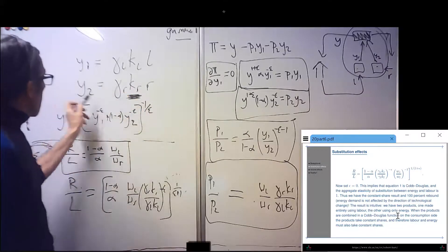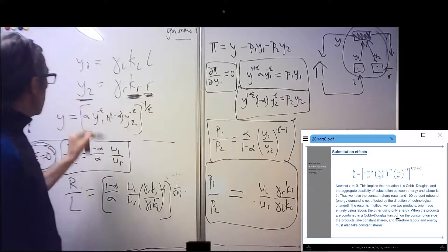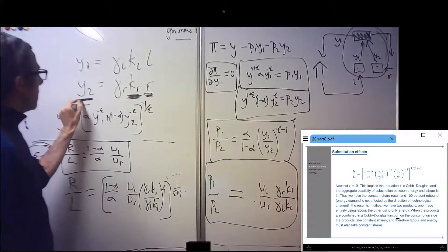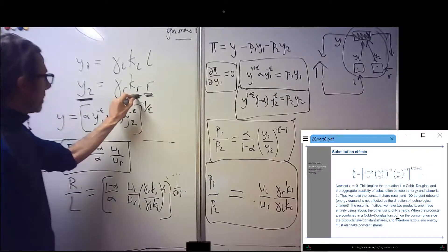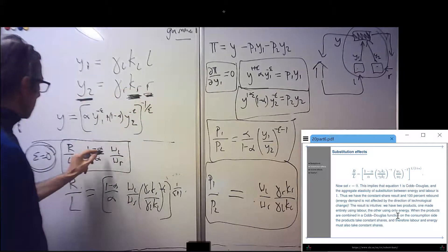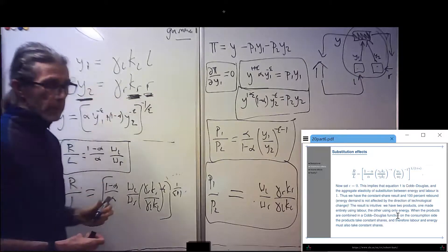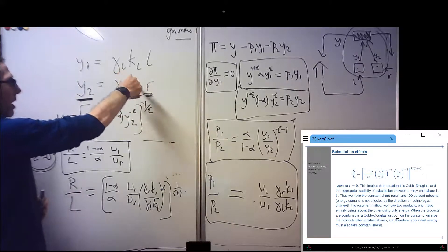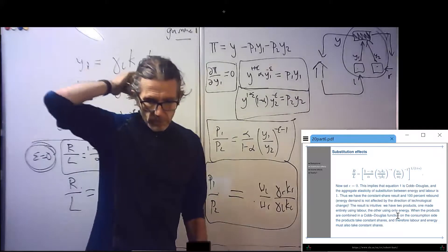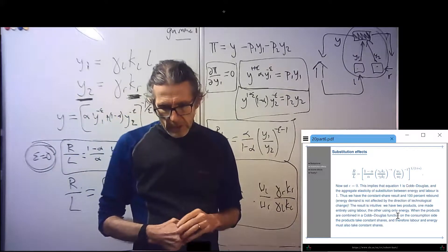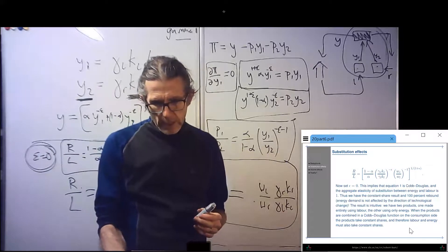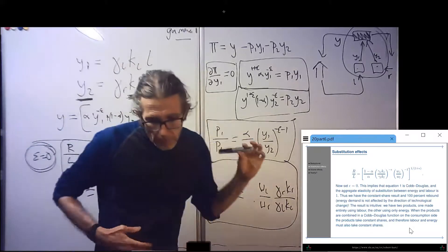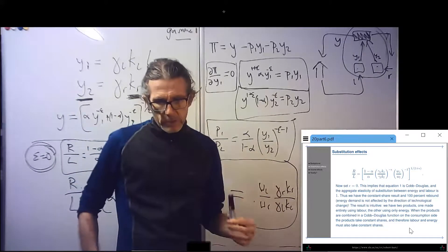So it's like if we raise KR, then we need less R to make a unit of Y2. But Y2 gets cheaper. Consumers buy more of Y2. Rebound takes away the effect of increasing KR. And there's no effect on the factor shares. The rebound, you have a hundred percent rebound. And actually, R actually goes up because your overall productivity in the economy has gone up. So more resources will get sucked in. The result is intuitive. We have two products, one made entirely using labor, the other using only energy. When the products are combined in a Cobb-Douglas function on the consumption side, the products take constant shares. Labor and energy must also take constant shares.